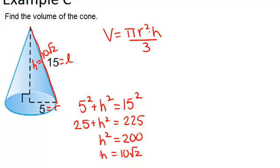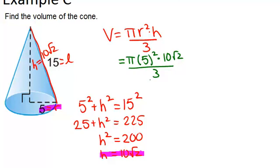we can substitute in each of those into our formula to solve for the volume. So the volume will end up being pi times 5 squared times 10 root 2 divided by 3. So that gives us 250 root 2 pi divided by 3.